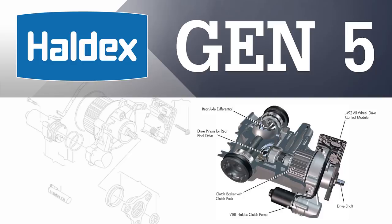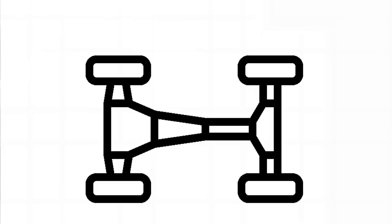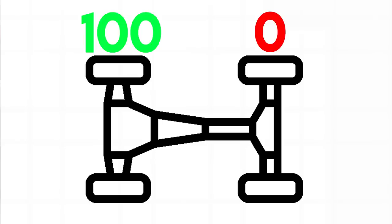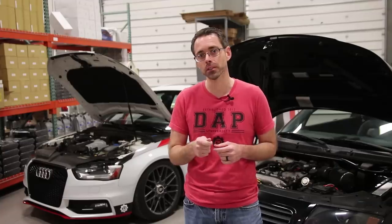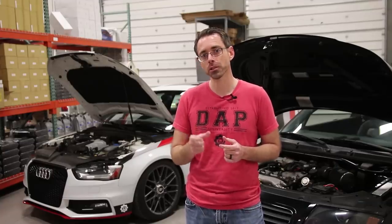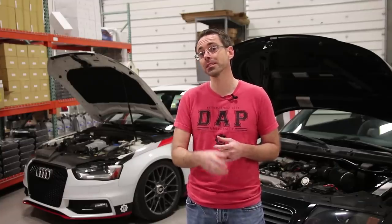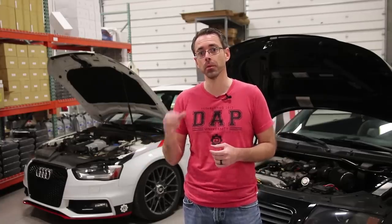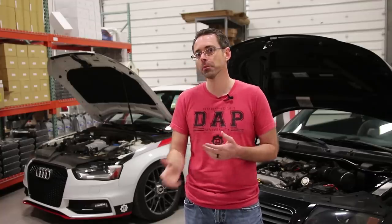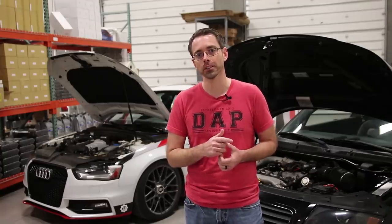Last, we have the Gen 5 Haldex system. This is the most current all-wheel drive system found in Audi models. It uses a distribution of 100% to the front and 0% to the rear — much like the Gen 4 — again with a 50-50 split maximum. It also uses a proactive system, much like Gen 4. The exception is that the Gen 4 system does have upgradeable modules currently available, while the Gen 5 does not have any upgrades available at this time, though I suspect we'll see some in the future. And that completes the fifth generation and final Haldex system.